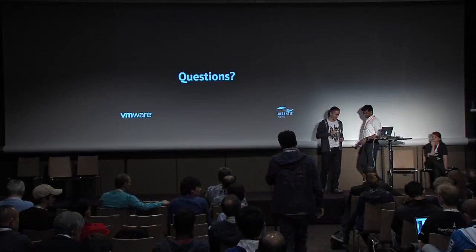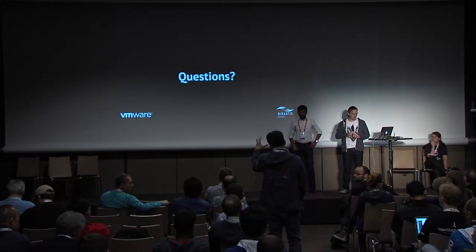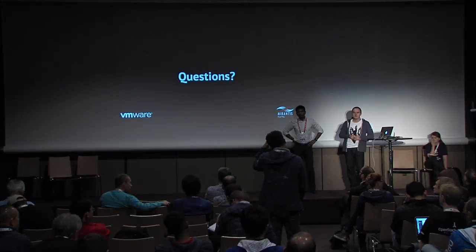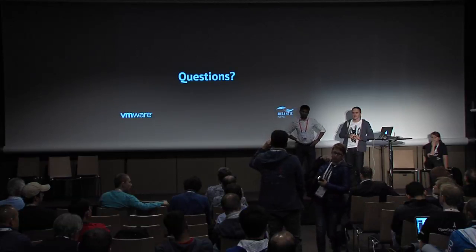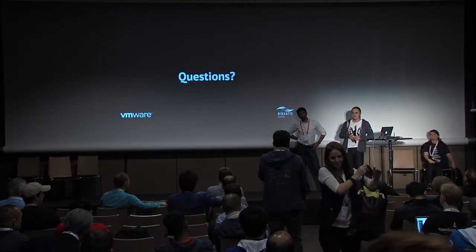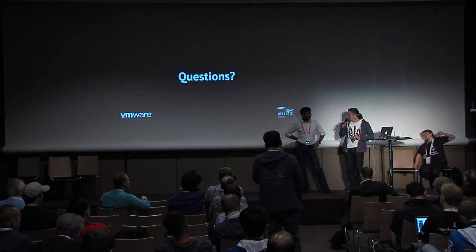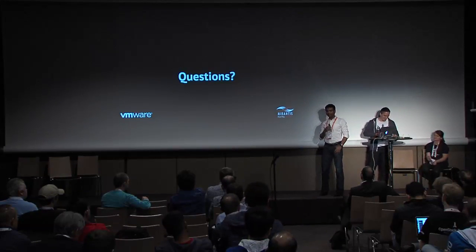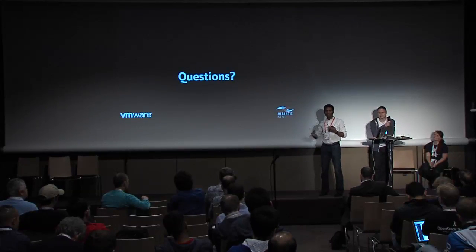Thanks for that. The biggest problem when mixing different types of private cloud systems in one framework is networking. You mentioned NSX — what if we don't use NSX, but use vShield or some other traditional solution? How do we deal with the networking part? Without NSX, managing networking in a heterogeneous setup is going to be a problem. When you start mixing and matching, that's one of the first issues you run into.